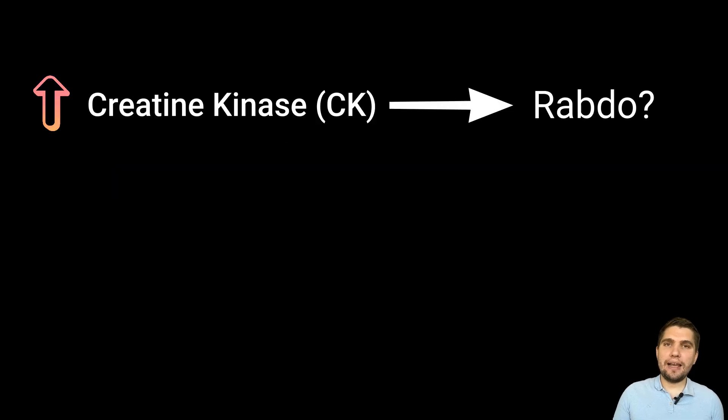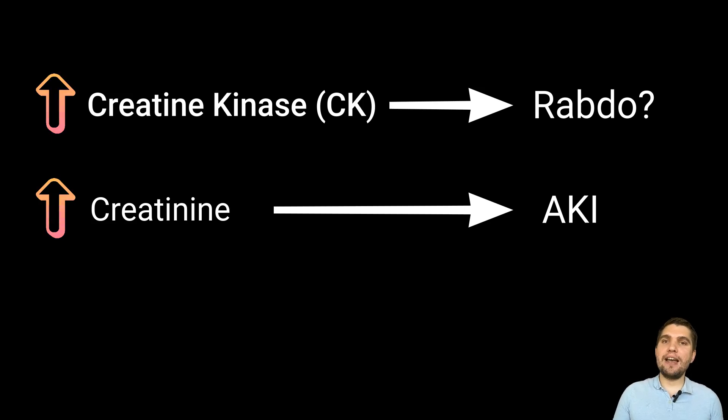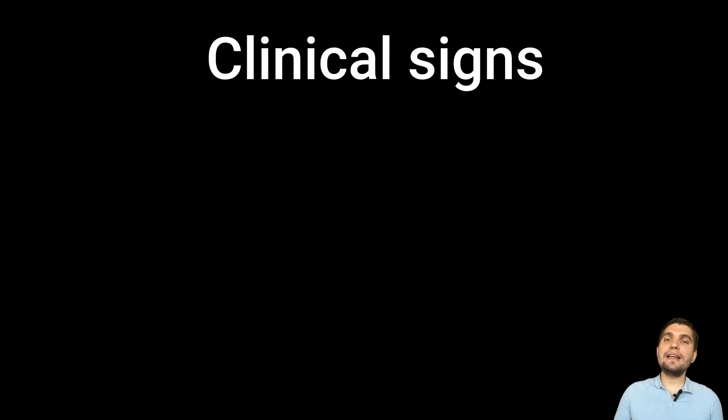Traumatic rhabdomyolysis is typically screened by checking creatine kinase or CK levels, while acute kidney injury is identified by elevations in kidney values and may be associated with changes in acid-base balance as well.